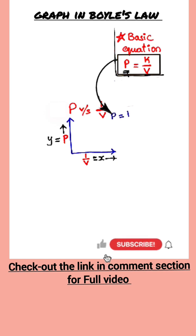Can I write it like this? P is equals to K into 1 by V. Can I write it like this?